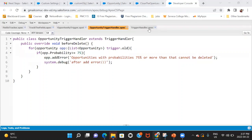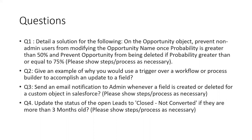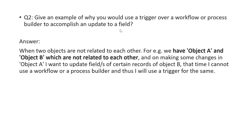The next question asks: give an example of why you would use a trigger over a workflow rule or process builder to accomplish a field update. Workflow and process builder can both update a field, so why use a trigger? My answer: when two objects are not related to each other — for example, Object A and Object B with no relationship — and on making changes in Object A you want to update fields on records in Object B, you cannot use a workflow or process builder. That's when you'd use a trigger instead.